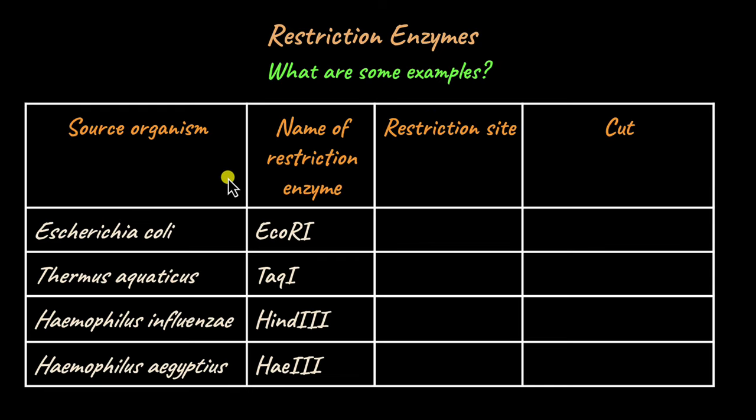There are several restriction enzymes that have been identified so far, and they have a specific type of nomenclature or the way they have been named. For example, EcoRI is a type of restriction enzyme. So what does this EcoRI stand for? E stands for Escherichia, the genus name of the source organism. CO stands for the first two letters of the species name of the source organism. R stands for the strain of the source organism from which the enzyme was extracted, and I is the sequence of the enzyme that has been extracted. So EcoRI is the first enzyme that was extracted from the R strain of Escherichia coli.